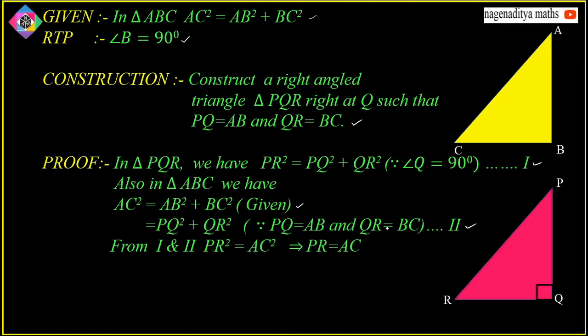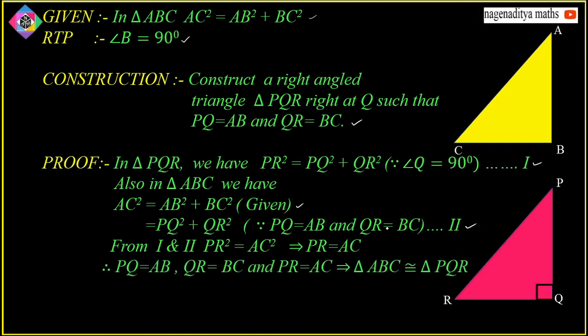Whenever the corresponding sides of two triangles are equal, the triangles must be congruent according to the SSS property. Therefore, since PQ = AB, QR = BC, and PR = AC, triangle ABC is congruent to triangle PQR. Whenever two triangles are congruent, they must be similar — though the converse is not true. Therefore, triangle ABC is similar to triangle PQR.